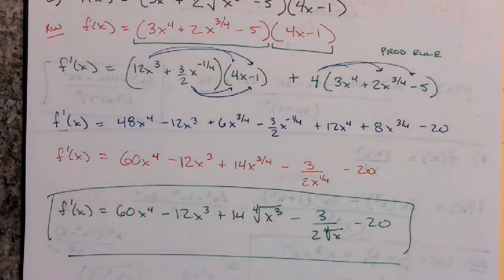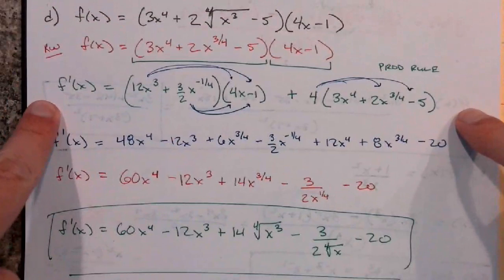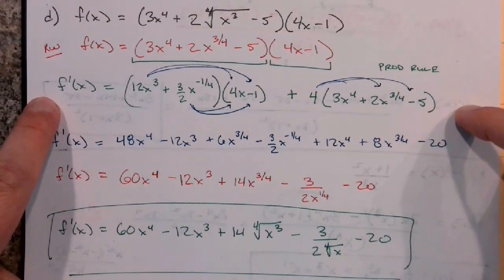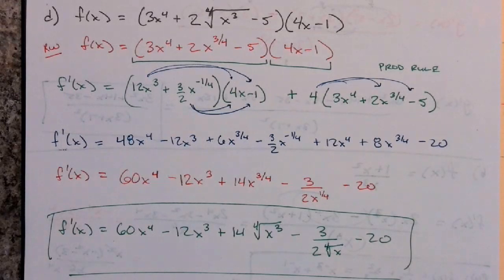Simplifying might be a pain, but it's really just exercising your algebra skills. The calculus part — the derivatives — isn't overly challenging once you understand the rules. What trips people up is the algebra. If I say do not simplify, just take the derivative using the rule and leave it in that form. If I don't say do not simplify, you should always simplify. Make sure you know the difference between product and quotient rule: product rule is for a function times a function; quotient rule is for a function divided by a function. You have to practice them to make sure you understand them.